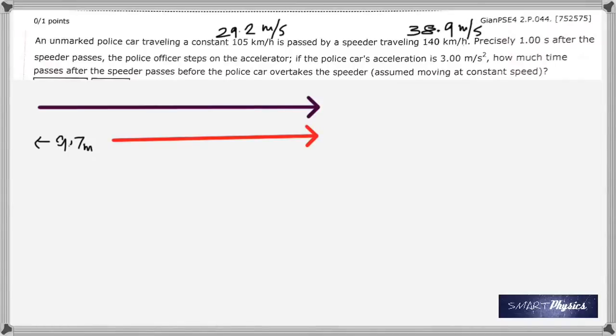Therefore, the difference between them is 9.7 meters per second, which multiplied by one second gives you 9.7 meters. Which means the speeder is ahead by 9.7 meters.